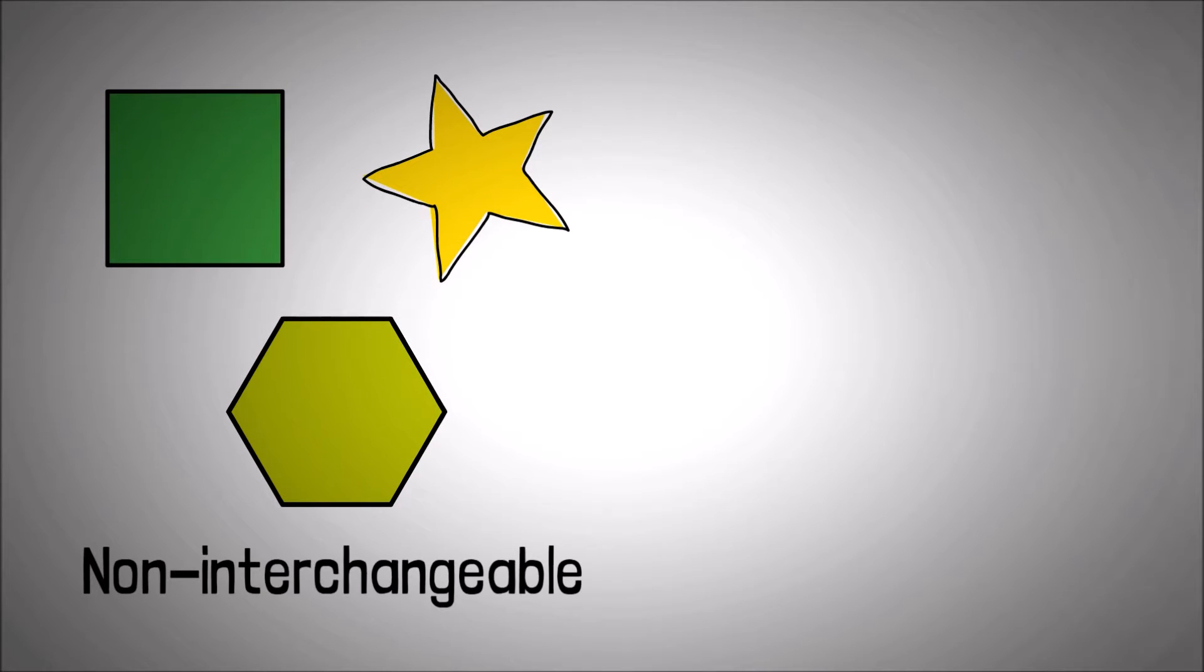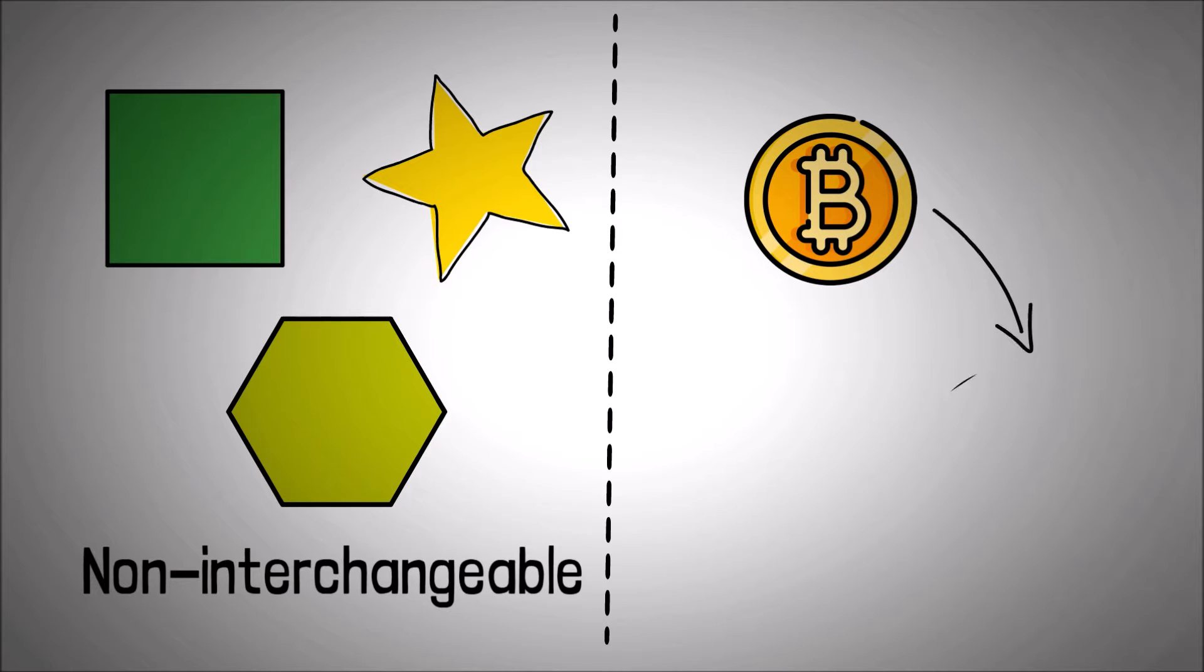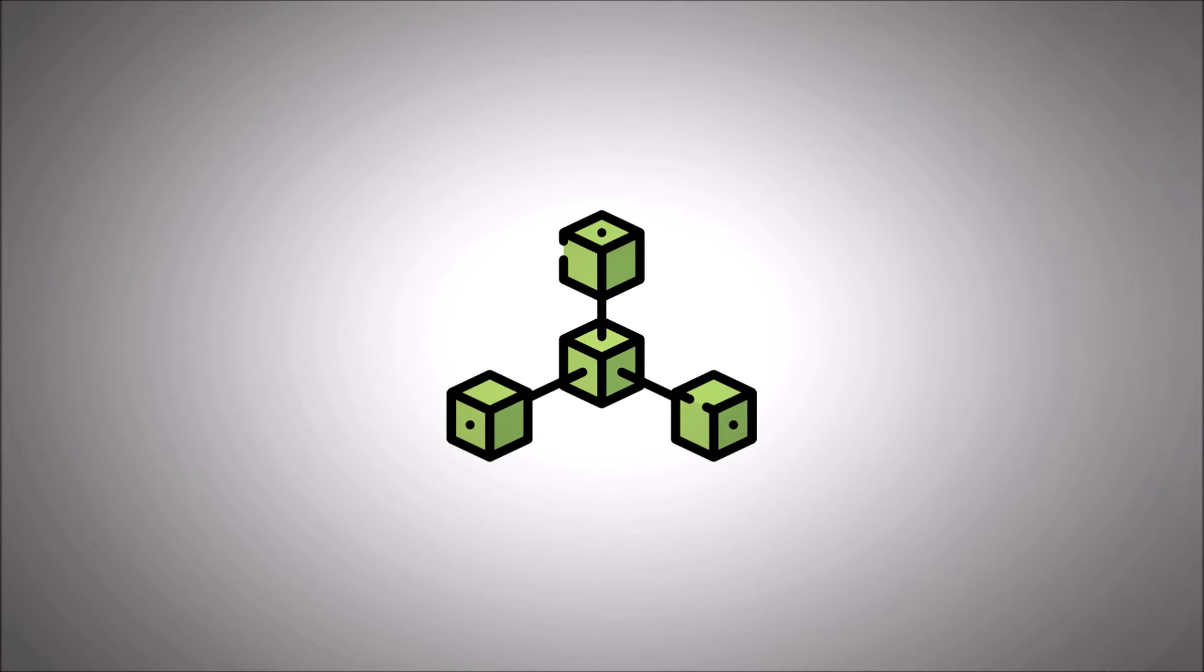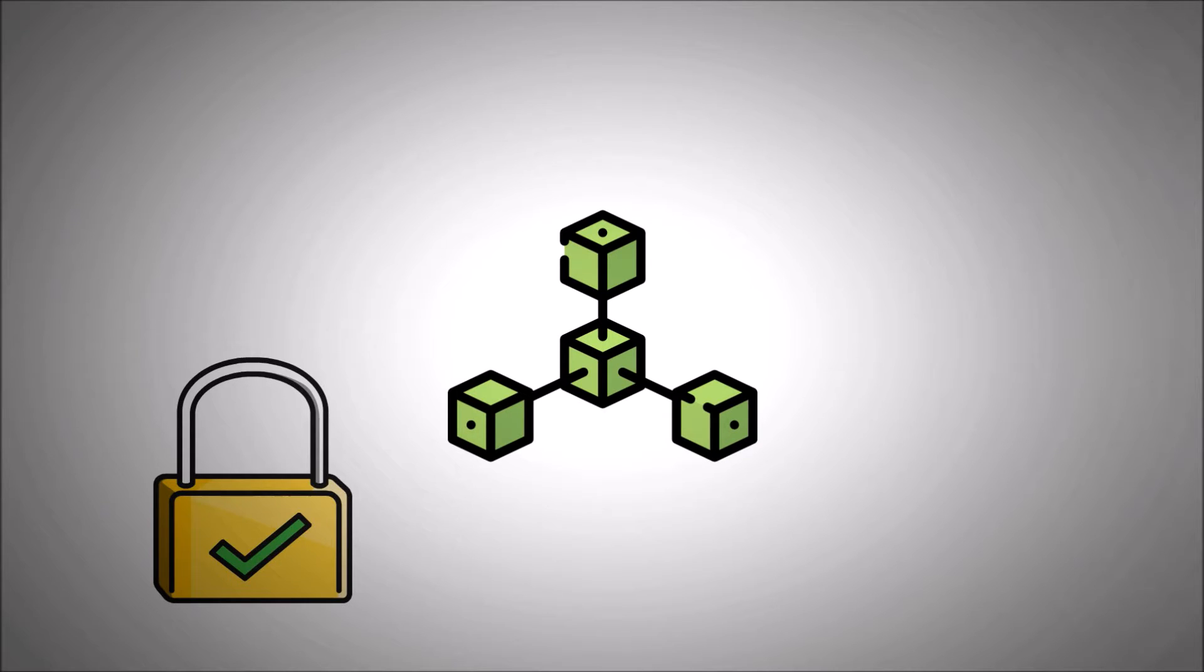that is, non-fungible, unlike Bitcoin. One Bitcoin is exactly the same as another Bitcoin, but NFTs are always different. Just like cryptocurrencies, NFTs are also stored on a blockchain. Therefore, the proof of ownership of a particular digital asset is publicly available and verifiable.